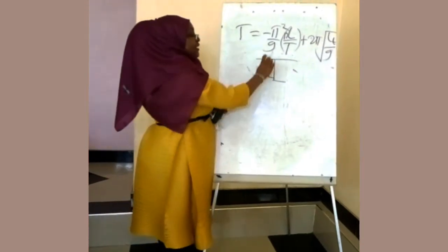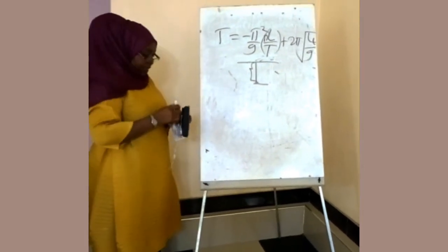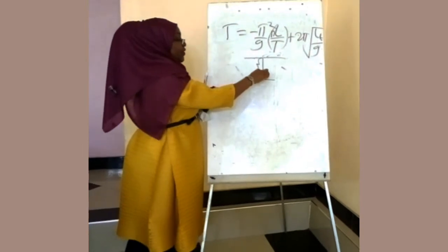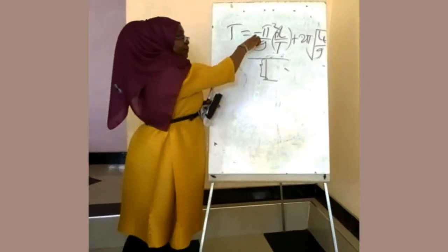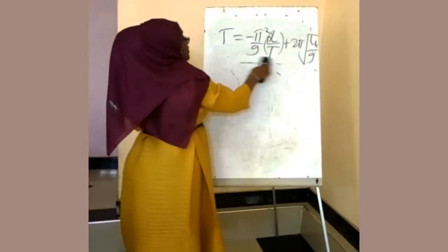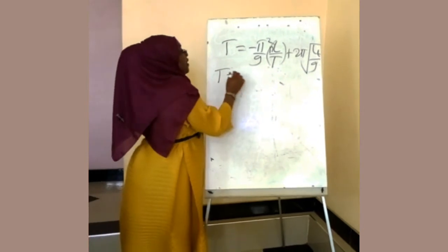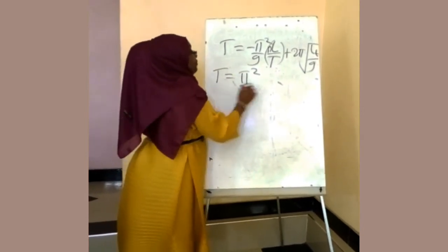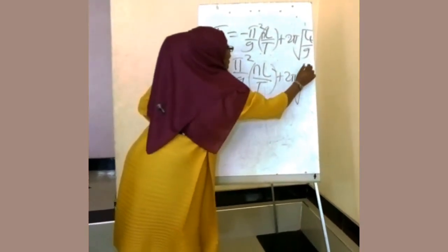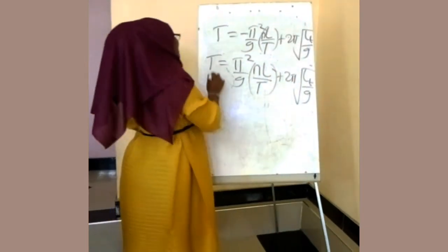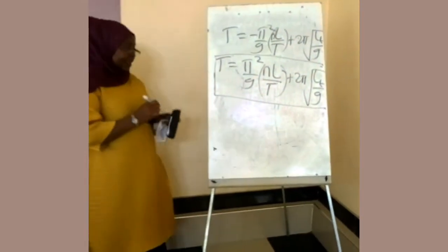If we can decrease the distance from the suspension point to the stopper, this formula can be used. So if the distance is increased from the stopper to the suspension point, the formula is the same but without a negative sign. The formula applies when the distance from the stopper to the suspension point is increased.